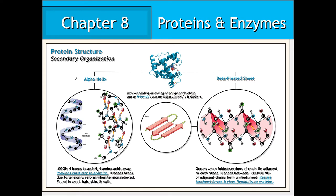Once a polypeptide's primary structure is established, it may begin to either coil or fold in order to give rise to a secondary structure. The two main types are the alpha helix and the beta pleated sheet. The alpha helix involves a coiling of the polypeptide chain due to the establishment of hydrogen bonds between non-adjacent carboxyl and amino groups. The alpha helix exhibits an elastic property, and alpha helices are found in proteins that constitute wool, hair, skin, and nails.